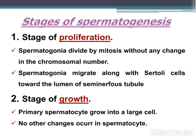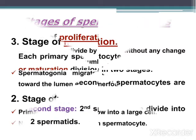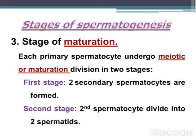In the stage of proliferation, spermatogonia divide by mitosis without any change in the chromosomal number. The spermatogonia migrate along the Sertoli cells towards the lumen of seminiferous tubules. In the stage of growth, primary spermatocytes grow into a larger cell with no other changes occurring. The third stage is the stage of maturation.